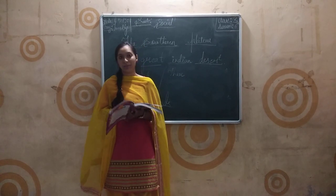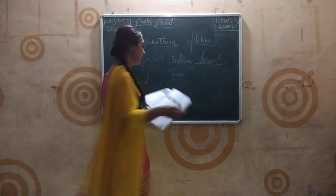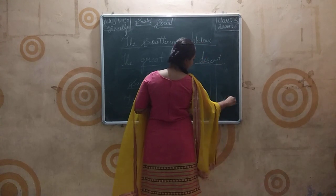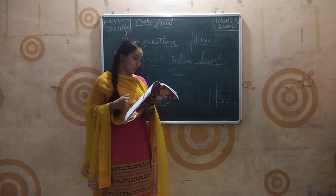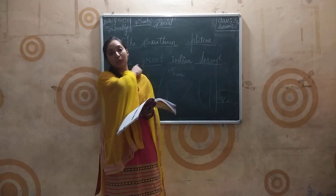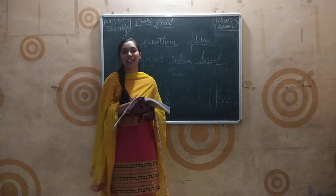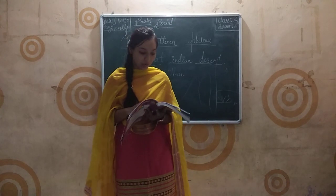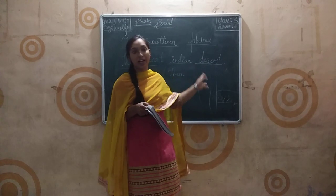Mountain regions are always cold, while in plains summers are too hot and winters are very cold. The climate in the coastal area is mild - neither very hot nor very cold. The climate of the desert is very hot and dry throughout the year.